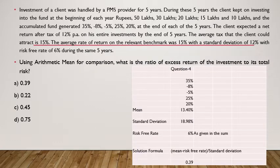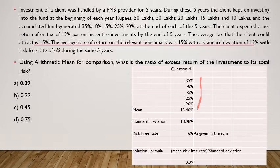The final calculation asks for the ratio of excess return of the investment to its total risk, using arithmetic means — which is the Sharpe ratio. Write all five return values, then use the AVERAGE function in Excel to get the mean. Use the STDEV function to find the standard deviation. The formula is: (mean minus risk-free return) divided by standard deviation. This gives you a value of 0.39, which is the answer to select.